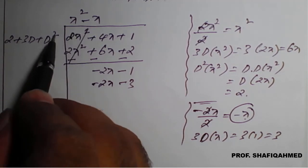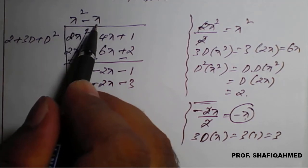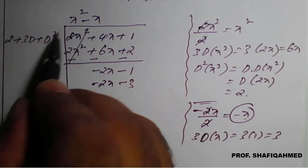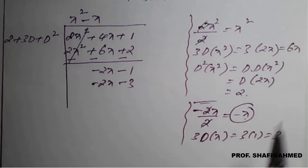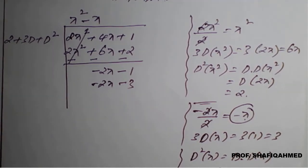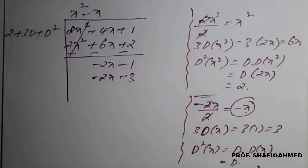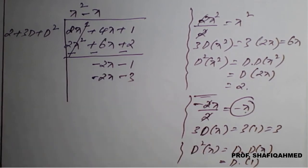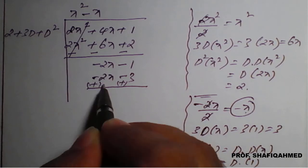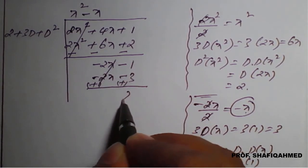For D²(x): D of (D of x) = D(1) = 0, so that term is zero. Now change signs: plus, plus. So −2x + 2x cancels, and −1 + 3 = +2. We now need to eliminate this 2 as well.